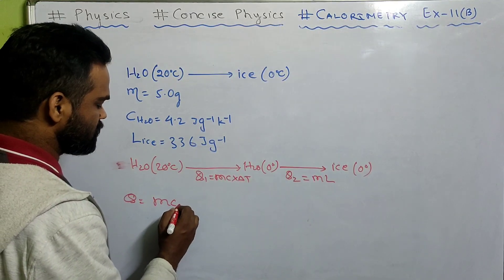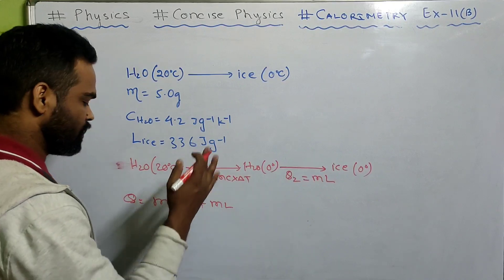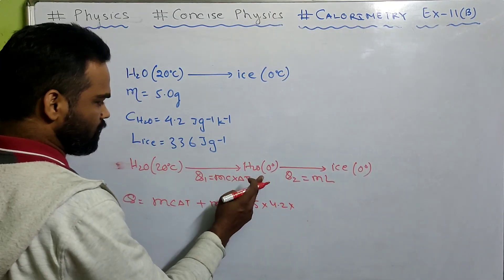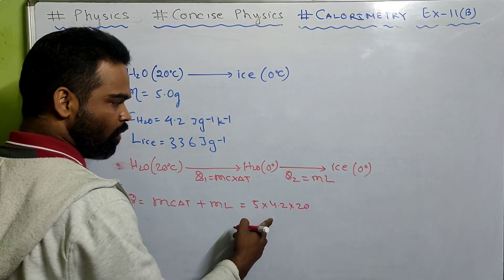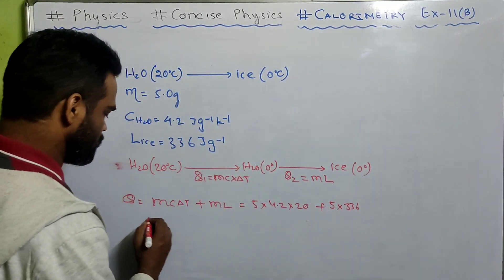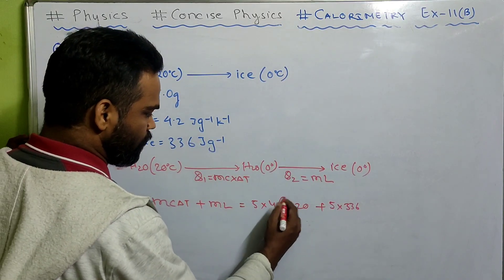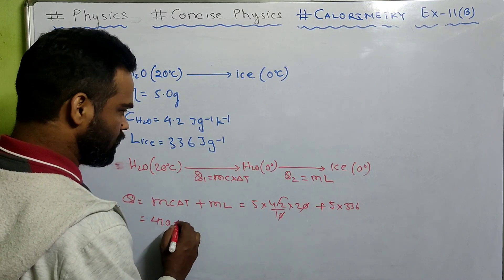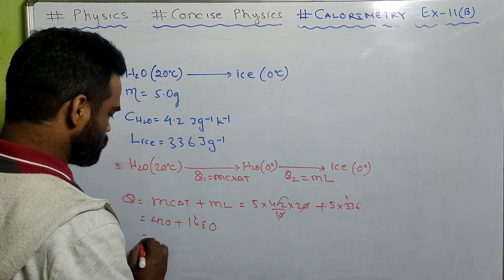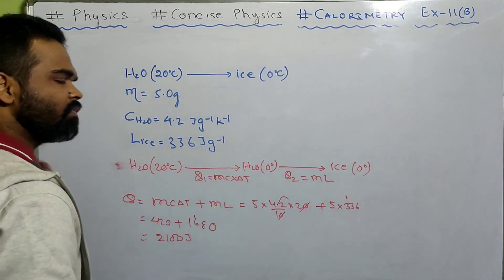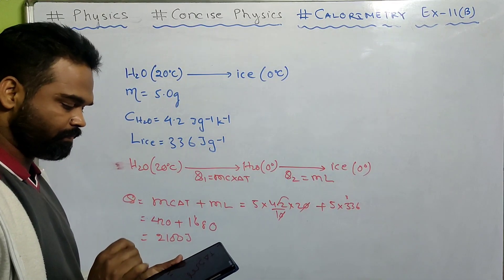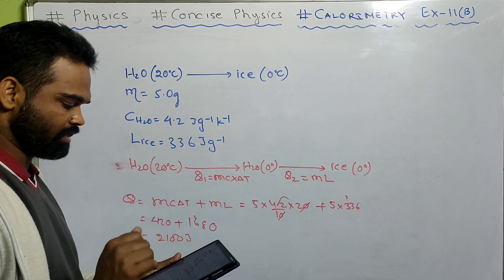Total heat equals Q1 plus Q2, that is MC delta T plus ML. Substituting values: mass is 5 g, C is 4.2, delta T is 20 minus 0 equals 20, so Q1 is 420 joule. M is 5, L is 336, so ML is 1680 joule. Total heat is 420 plus 1680 equals 2100 joule. This much energy is released when water at 20°C changes to ice at 0°C. Answer: 2100 joule. Correct.